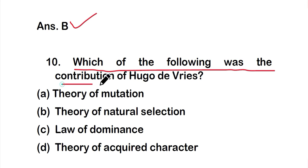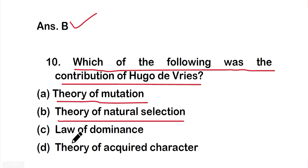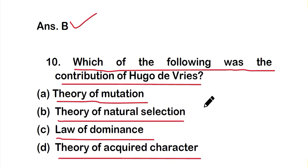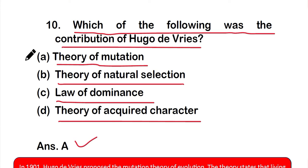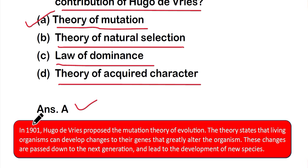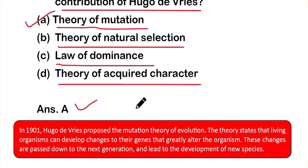Question 10: Which of the following was the contribution of Hugo de Vries? Option A: theory of mutation, option B: theory of natural selection, option C: law of dominance, or option D: theory of acquired character. The correct answer is option A — theory of mutation. In 1901, Hugo de Vries proposed the mutation theory of evolution. The theory states that living organisms can develop changes to their genes that greatly alter the organism. These changes are passed down to the next generation and lead to the development of new species.